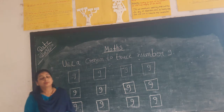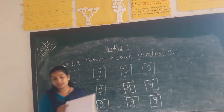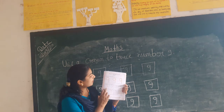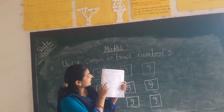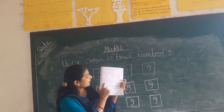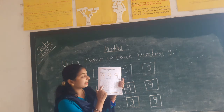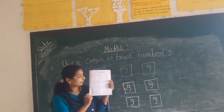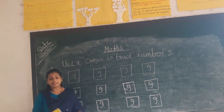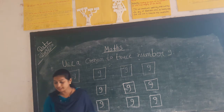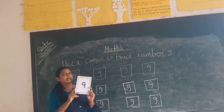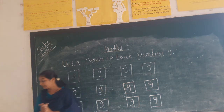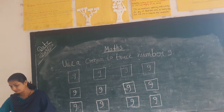Okay, so bachcho, aapko aapne book, book ke page number 29, use a pencil to write number 9. Aapko pencil se aapko number 9 ko press ke write karna hai. Ye aapka home work raha. Okay, so bachcho, aapne kya sikha? Number 9. Yes, number 9 ko pressing ke dwara write kiya. Okay.